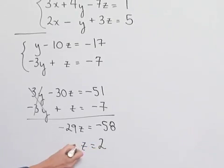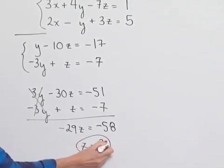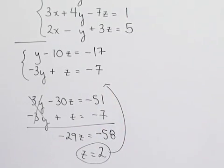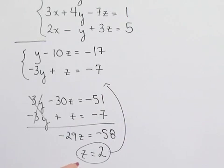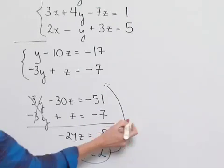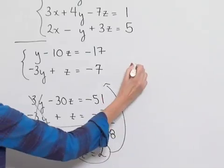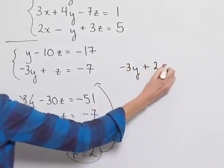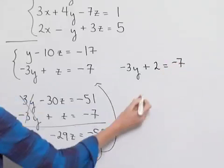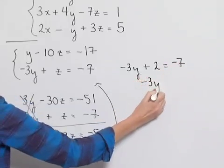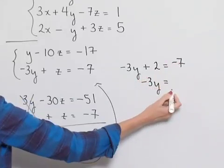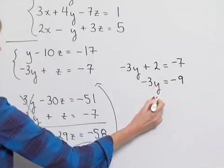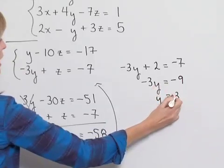Dividing both sides by negative twenty-nine gives us z equals two. Now since we found z, we can go back to one of our equations in the two equation, two unknown system and solve for y. Substituting z equals two into our second equation, we have negative three y plus two equals negative seven. Subtracting two from both sides gives us negative nine on the right-hand side. Dividing by negative three gives us y equals three.